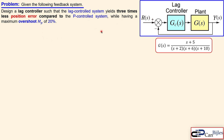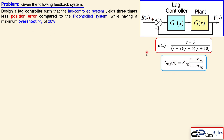We need to first do the P control system as reference, and then make the lag control system having three times less position error while keeping the overshoot maximum of 20%. The lag control transfer function has a zero and a pole and also its gain K_lag. We need to determine these three parameters.